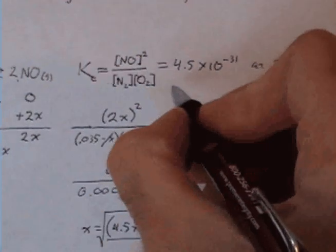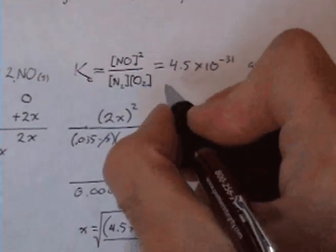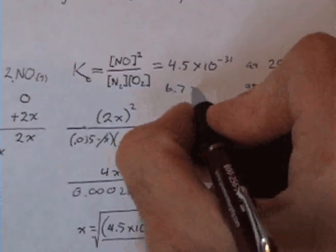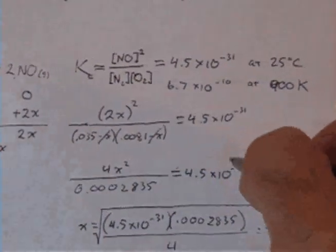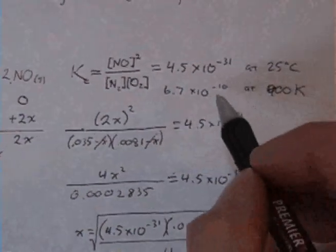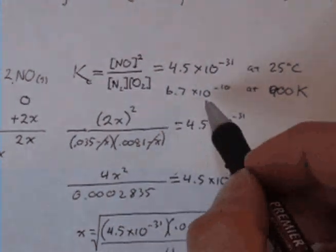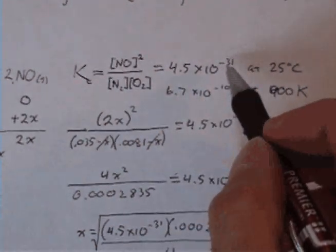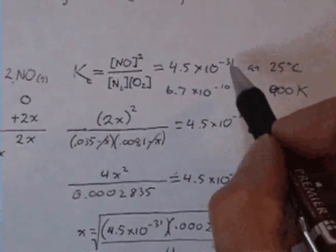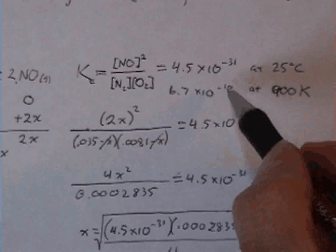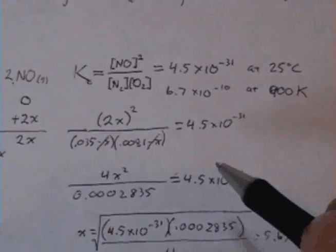...this value is 6.7 times 10 to the minus tenth. So you can see it's still a small number, but much larger than this number—I mean 20 orders of magnitude, 21 orders of magnitude larger than at room temperature.